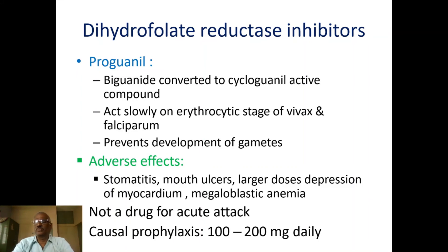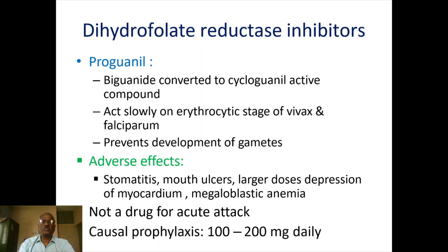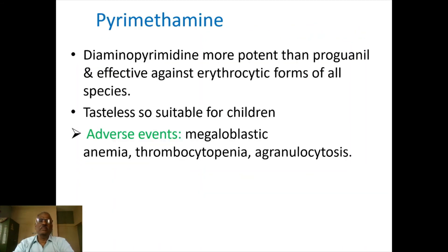Dihydrofolate reductase (DHFR) inhibitors are another class. Proguanil is converted to cycloguanil in the body, which is the active compound. It acts slowly on the erythrocytic stage of Plasmodium falciparum. Pyrimethamine is a diaminopyrimidine derivative and is more potent than proguanil. It is effective against erythrocytic forms of malaria and is tasteless, making it suitable for pediatric use.